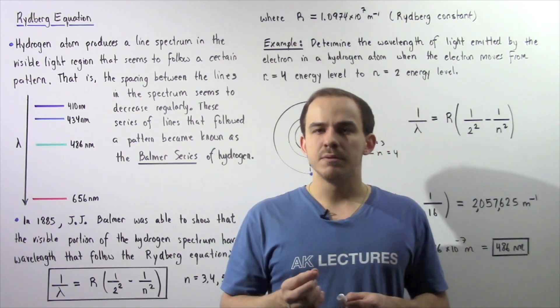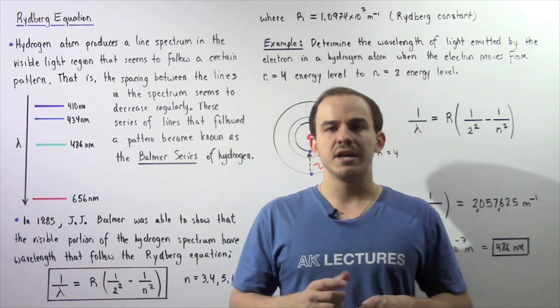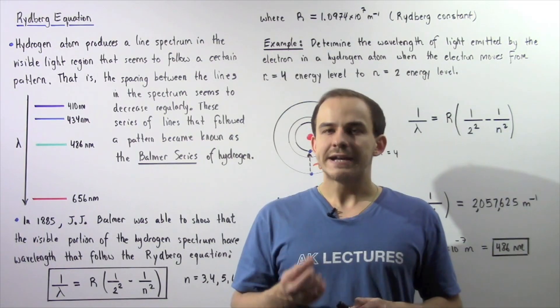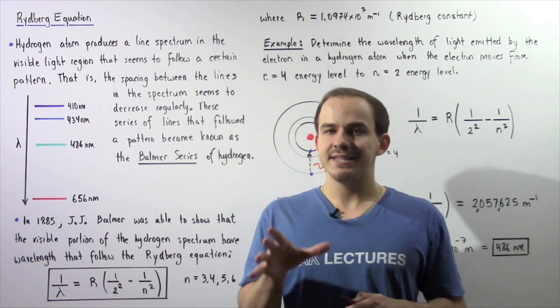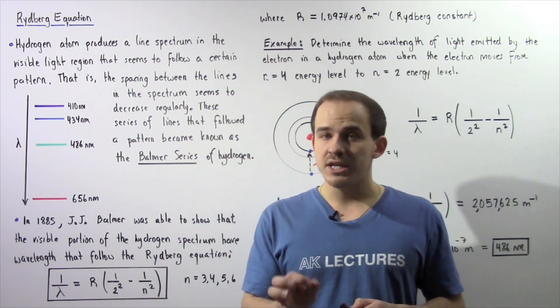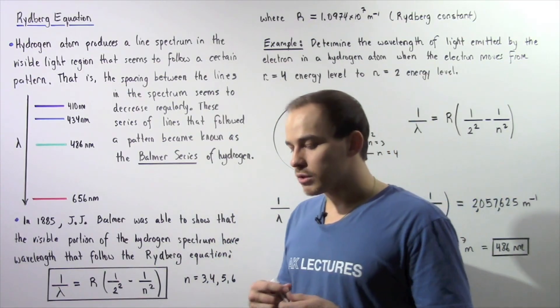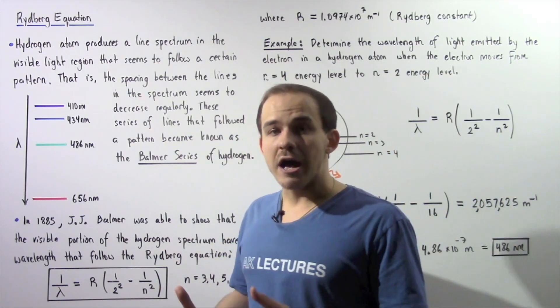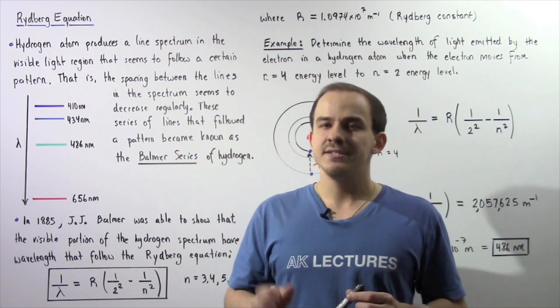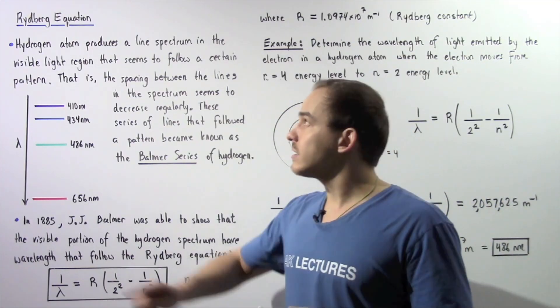Every single atom is capable of emitting electromagnetic radiation. And the electromagnetic radiation that is emitted by an atom is unique to that atom. Now the discrete line spectrum of an atom basically describes all the wavelengths of light that is emitted by that particular atom.